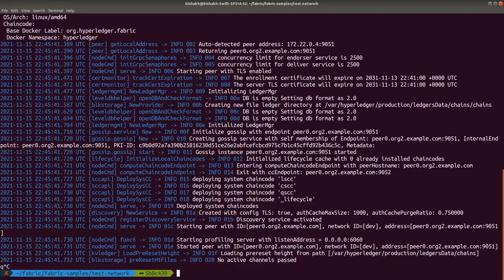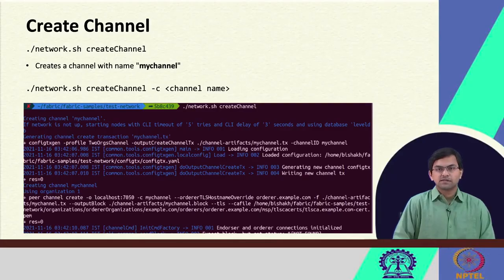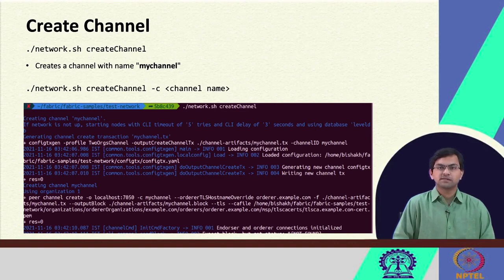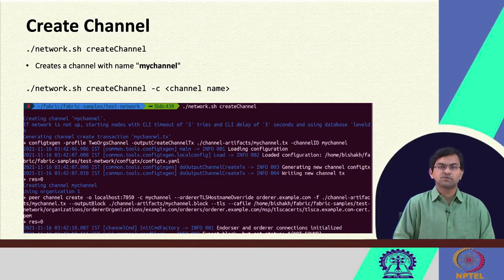Indeed there are no active channels when you start the Fabric test network for the first time. The Fabric test network gives you the different peers and orderers that are connected and running, but to get started using this network you need to create at least one channel. In Hyperledger Fabric, the ledger is per channel — for each channel there is one ledger — and to do any transactions you have to do them in specific channels. The first step after starting the test network is to create a channel.